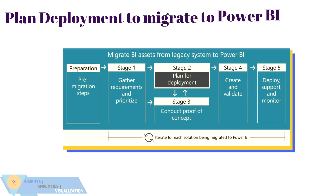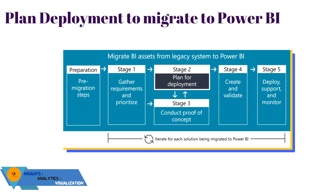As you can see on your screen, we are right now on Stage 2. Stage 2 and Stage 3 can be done in parallel, and after that we have to move to Stage 4 to create and validate. Now let's see what are all the steps that you need to consider in Stage 2.